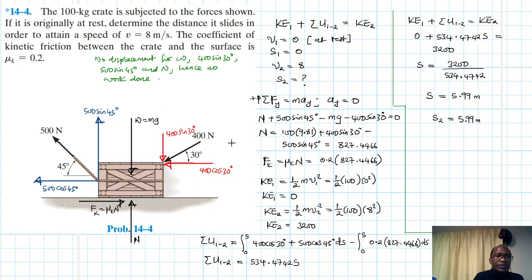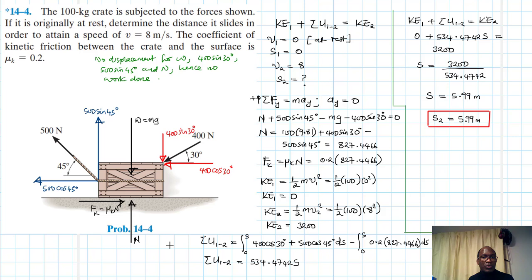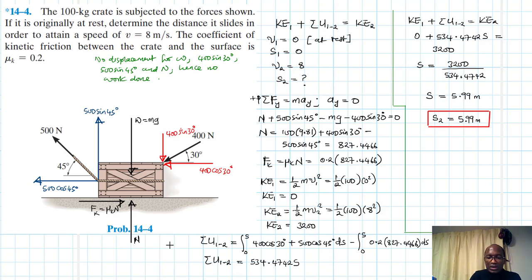We have found the distance that the box must slide in order to attain a speed of v equals 8 meters per second. I hope this video was helpful. If it was, please give it a thumbs up, continue subscribing and sharing the channel. Bye bye and see you in the next screencast.